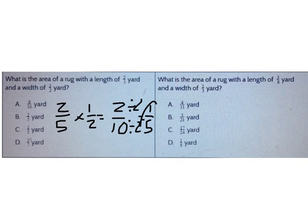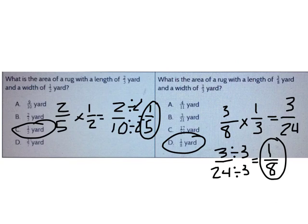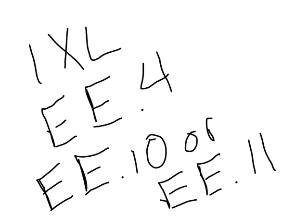Now you try the last question. What is the area of a rug with a length of 3/8 yards and a width of 1/3 yard? The correct answer is D. 3/8 times 1/3 is 3 over 24. The largest number that goes into both is 3. Dividing 3 and 24 by 3 gives 1/8. You've done a great job on this video. Now choose IXL Skill EE-4, EE-10, or EE-11.